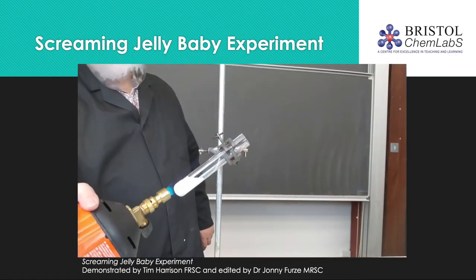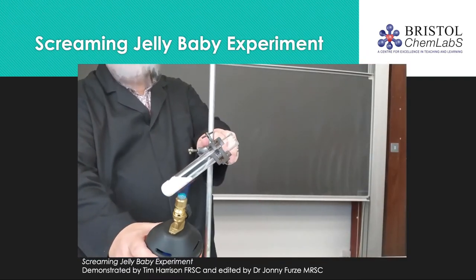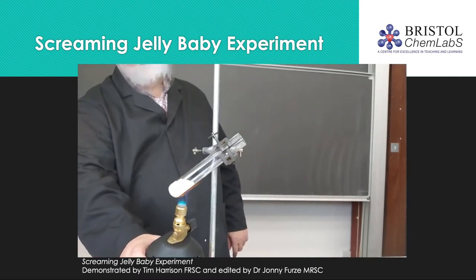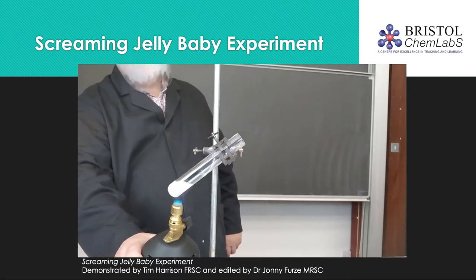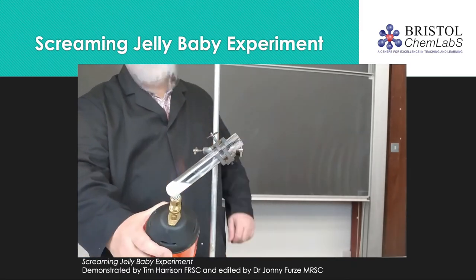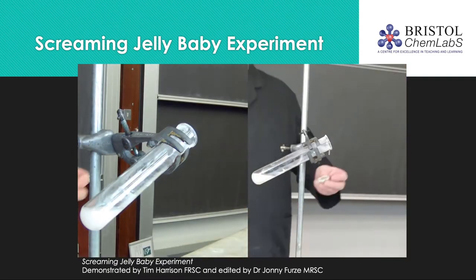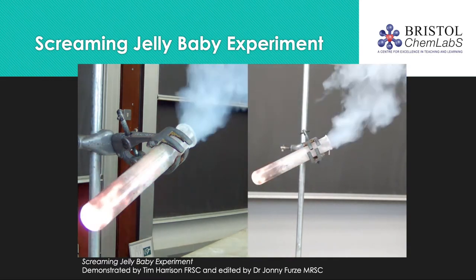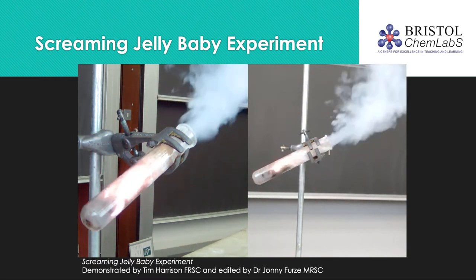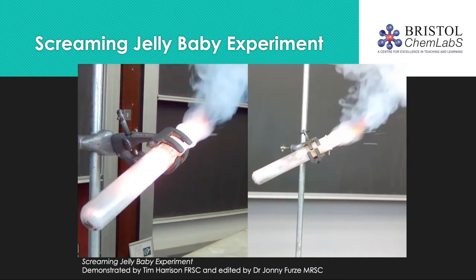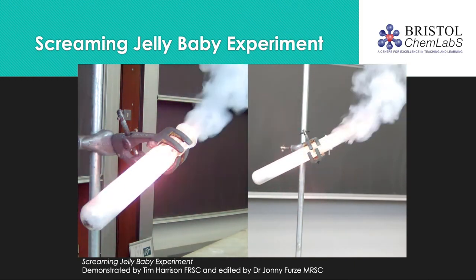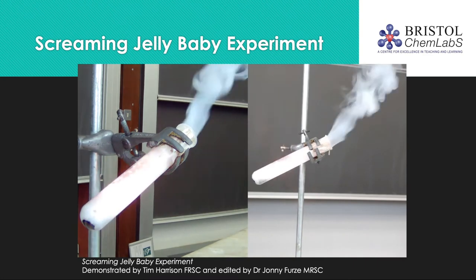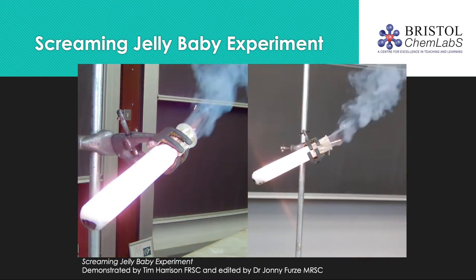This video titled The Screaming Jelly Baby Experiment, again demonstrated by Tim Harrison and produced by Dr Johnny Furs, is an excellent example of a chemical reaction that releases energy. One jelly baby is approximately 75% sugar, thus each sweet can release 100 kilojoules of energy. Assuming all of the energy is transferred and there is no waste energy, this will be sufficient to raise 300 millilitres of water from 20°C to 100°C, or for a person weighing 70 kilograms to sleep for about 30 minutes, or sit in the classroom for another 10 minutes.